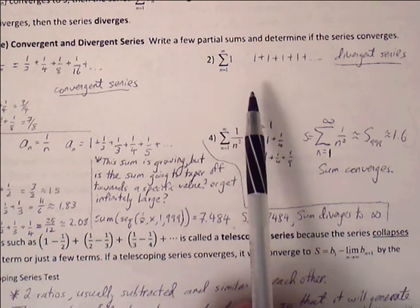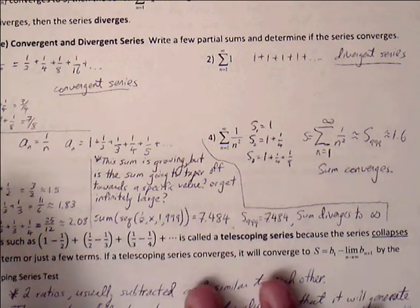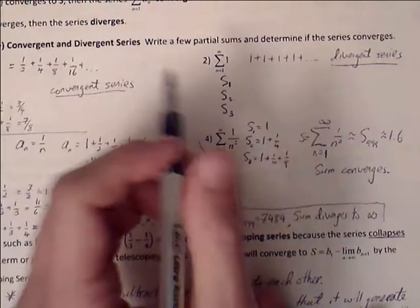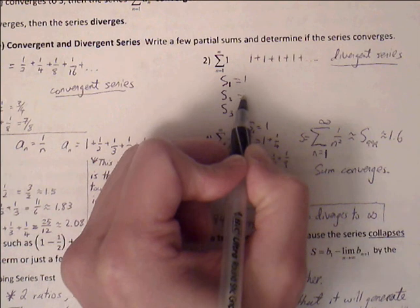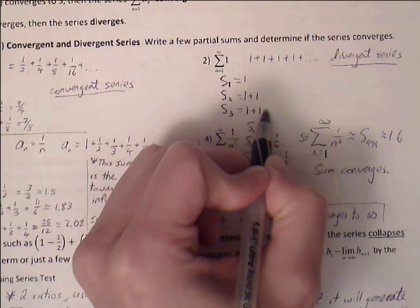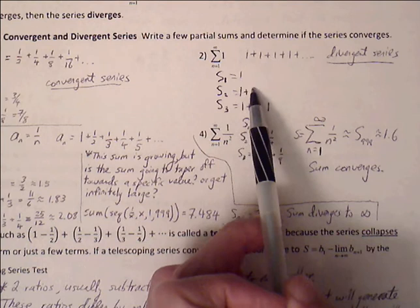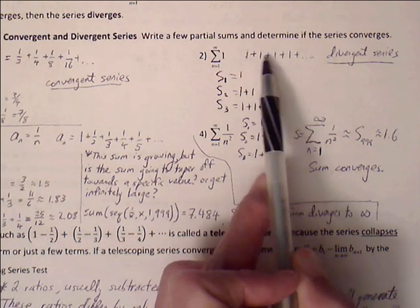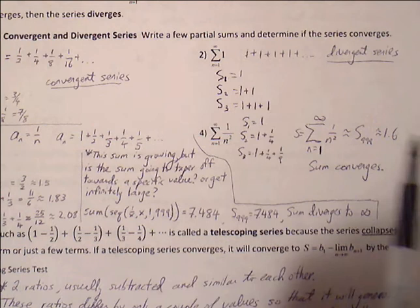The second example is the summation of 1, which is simply 1 + 1 + 1 + 1 and so on. Looking at the partial sums: S_1 = 1, S_2 = 1 + 1 = 2, S_3 = 3. The sequence of partial sums is not leveling out — these sequence values are not decreasing — so the series grows infinitely large. We can say this is a divergent series.